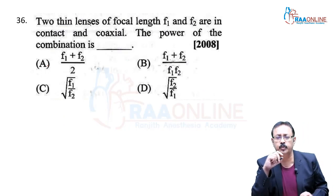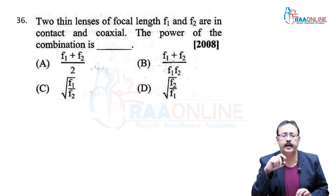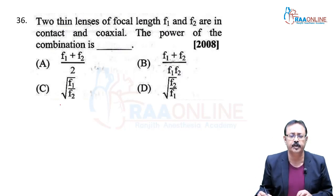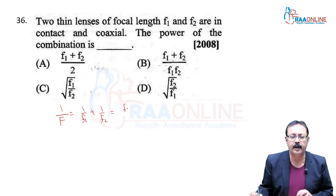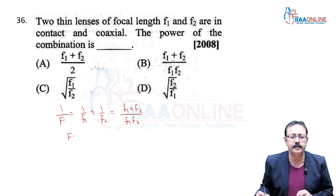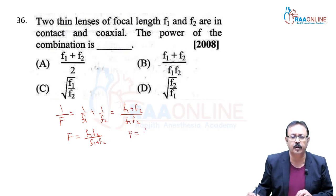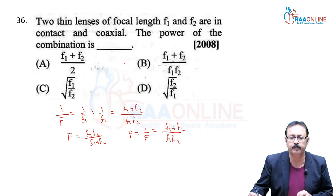Problem 36, from 2008. Two thin lenses of focal lengths F1 and F2 are in contact. The combined focal length is 1/F = 1/F1 + 1/F2 = (F1+F2)/(F1×F2). Power is the reciprocal of focal length, so power = (F1+F2)/(F1×F2). We go with option B.